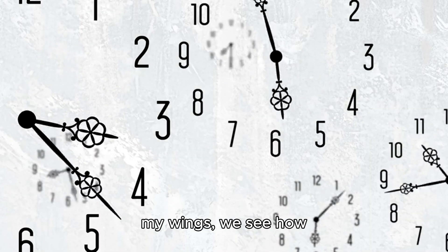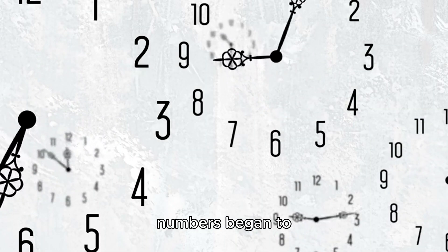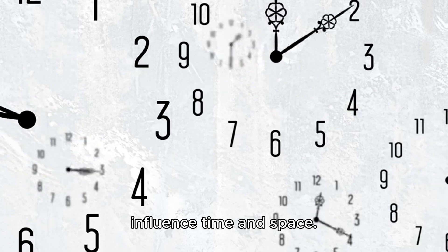The Sumerians were some of the very first humans to realize that numbers could help them shape the world. And so, with a sweep of my wings, we see how numbers began to influence time and space.